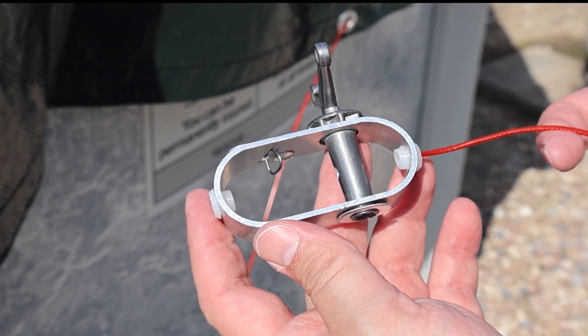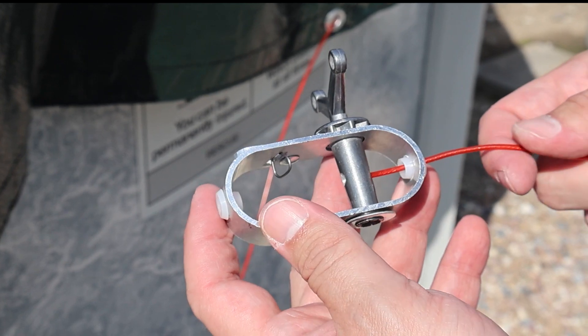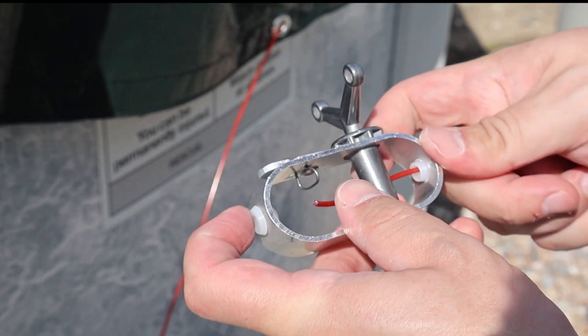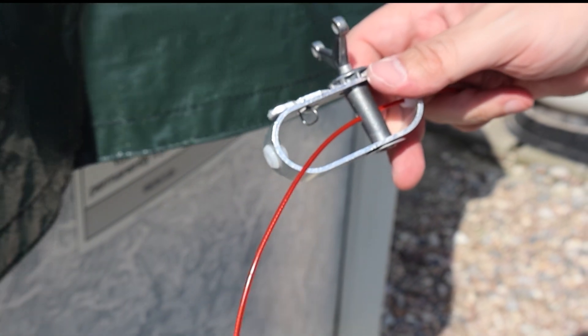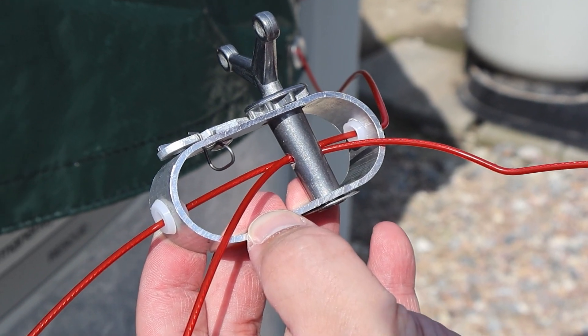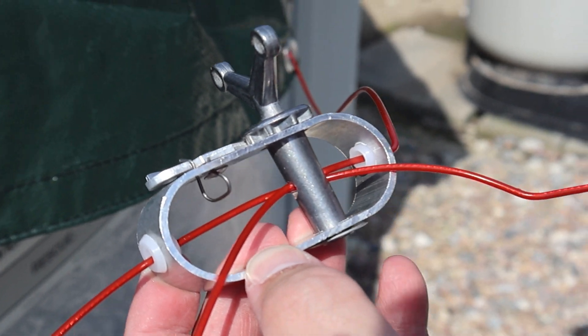Next, you will thread the two ends of the cable through the included winch. Take one cable and insert it through the outer hole of the metal winch, and then proceed to thread it through the middle hole. You will then repeat the same process by threading the other cable through the opposite outer hole.